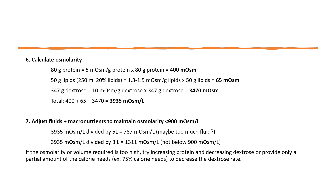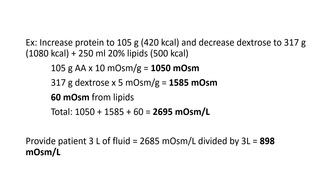So let's try increasing the protein and decreasing the dextrose. If you're unable to change the macronutrients because the patient can only have a limited amount of protein, you would either have to increase the fluid volume or not meet 100% of the patient's calorie needs. We increased the protein to 105 grams and decreased the dextrose to 317 grams, and also included 250 milliliters of 20% lipids. The total osmolarity decreased to 2,695 milliosmoles per liter. Providing 3 liters of fluid brings the osmolarity down to 898, which meets our goal.